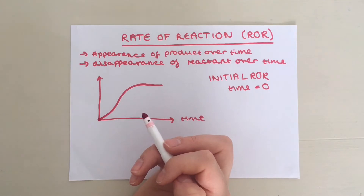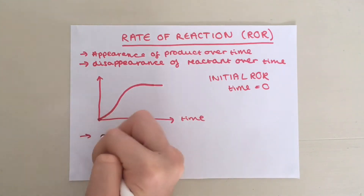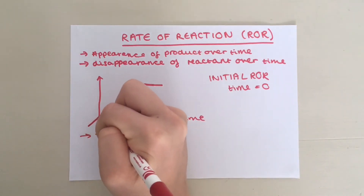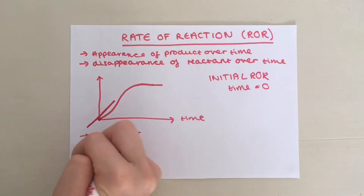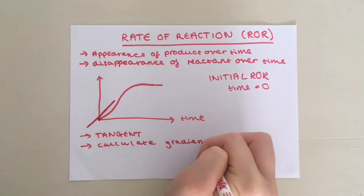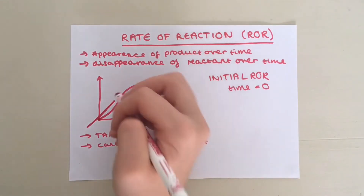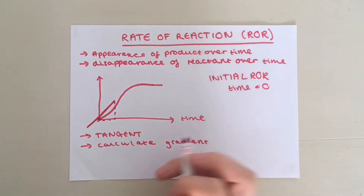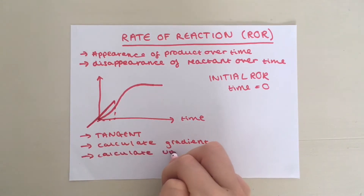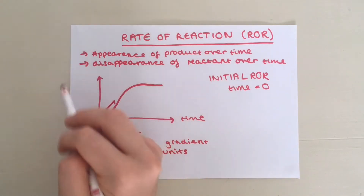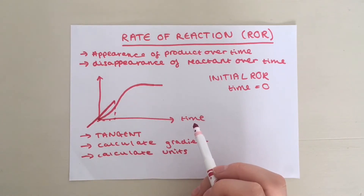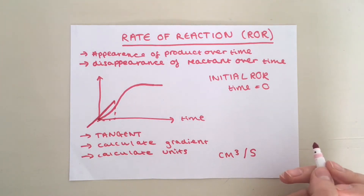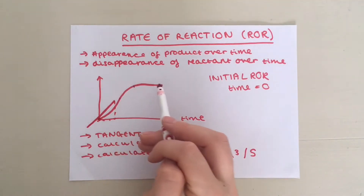To work out the initial rate of reaction, you need to draw a tangent to the curve at time equals zero. Then you need to calculate the gradient of your straight line by doing the difference in y divided by the difference in x. Then calculate the units by doing the y units divided by the x units. So in this case it would be centimetres cubed per second. This method can be used to calculate rate of reaction at other points of the graph as well.